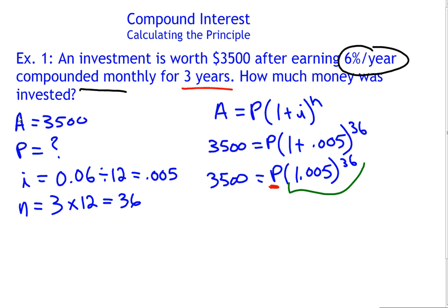Let's first find out what this works out to. 1.005 to the 36. If I plug that into the calculator, I get approximately 1.20. If I round to two decimal places.